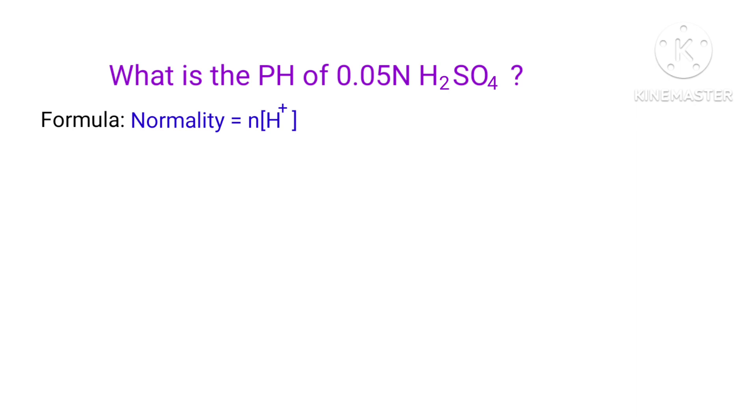Normality equals n times H+. H2SO4 gives us 2H+ plus SO4 2-.